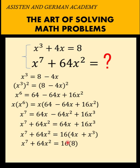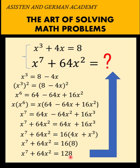Copying the left side equals 16 times 8. And so x to the 7th plus 64x squared is equal to 128. And that is now our answer to this question. So our final answer is 128.